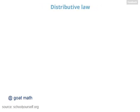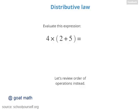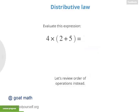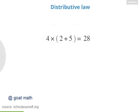Here, we'll introduce what's called the distributive law. First, try using order of operations to correctly evaluate this expression: 4 times (2 plus 5), where the 2 plus 5 is in parentheses. Right — first you add 2 and 5 to get 7, and then you multiply by 4 to get 28.